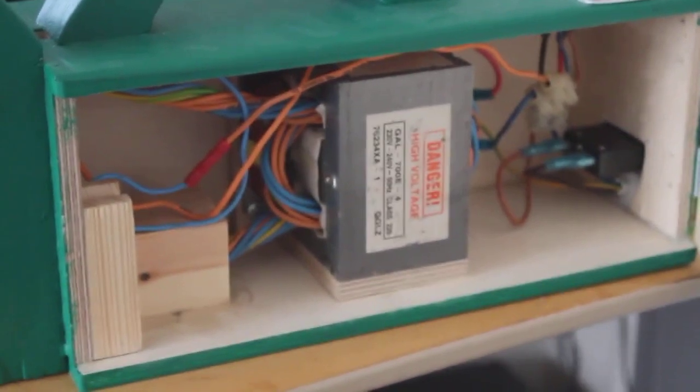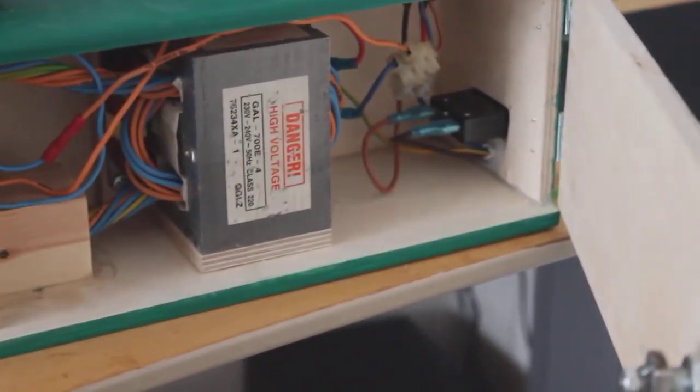Now we've got the microwave transformer in here with two turns. In back we have an outlet with a resettable fuse, and a switch for mains.